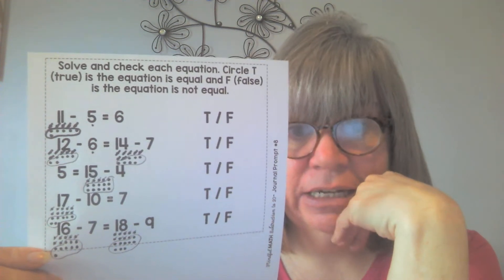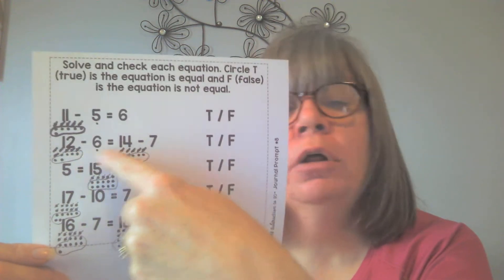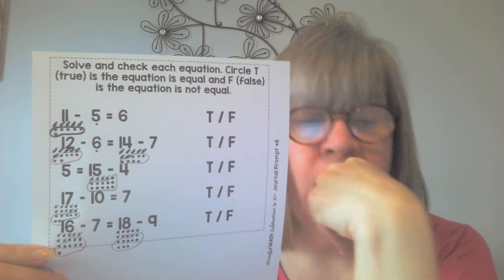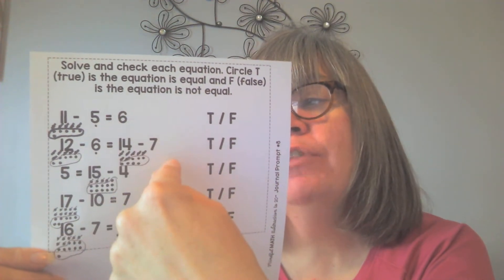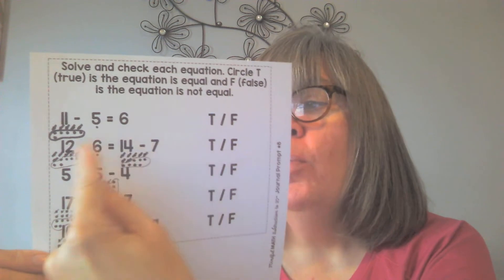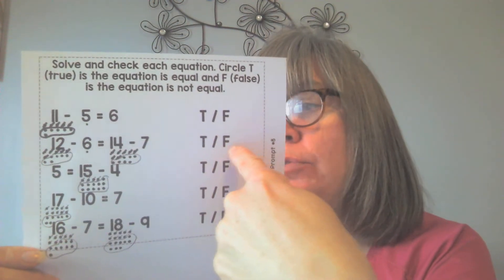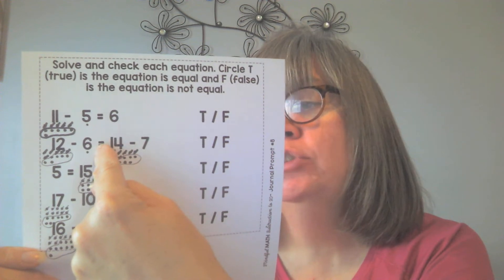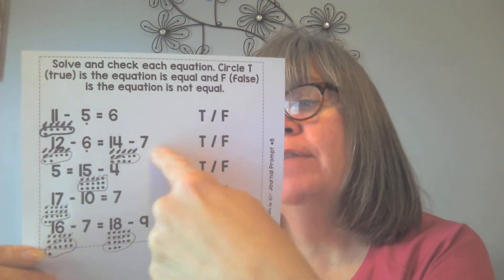The reason I did that is because it gets a little more difficult on the next question. There's an equation on either side of the equal sign, so in order to figure out whether this is true — 12 take away 6 is equal to 14 take away 7 — you first have to figure out the answer to each side.